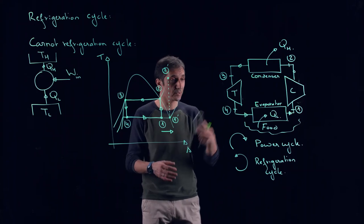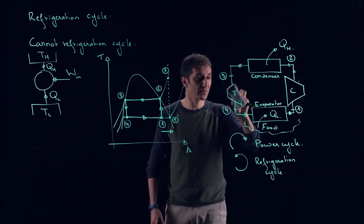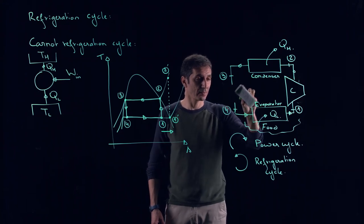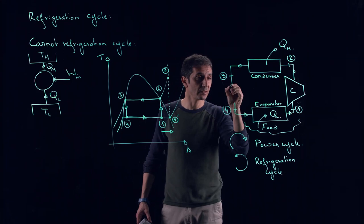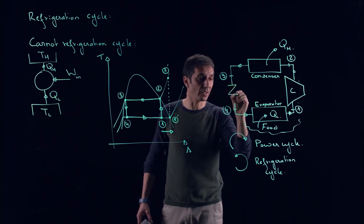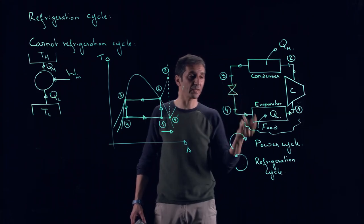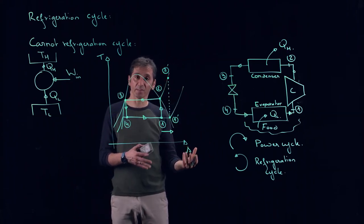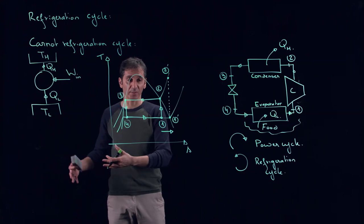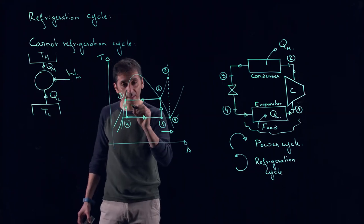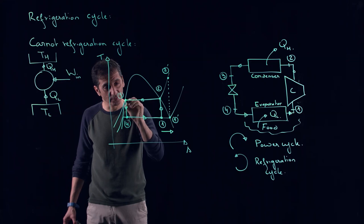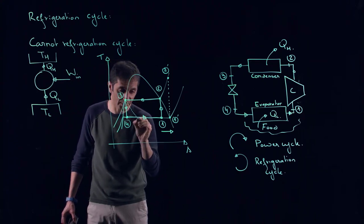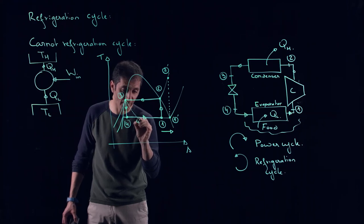So the solution in this case is not to use a turbine. We will simplify this by simply using a valve. Here we are replacing an isentropic process by an isenthalpic process. On our T-S diagram, this means that state three now goes like an isenthalpic process to four prime.